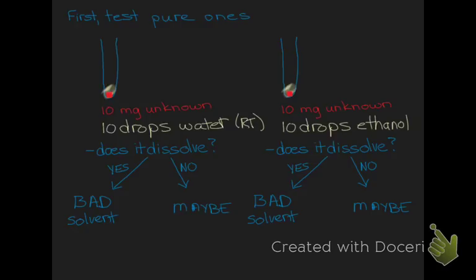If you've ruled out one of the two solvents because it completely dissolved the solid, stop working with that pure solvent — you've already ruled it out as a potential recrystallization solvent. But continue looking at the ones where the solid did not dissolve.